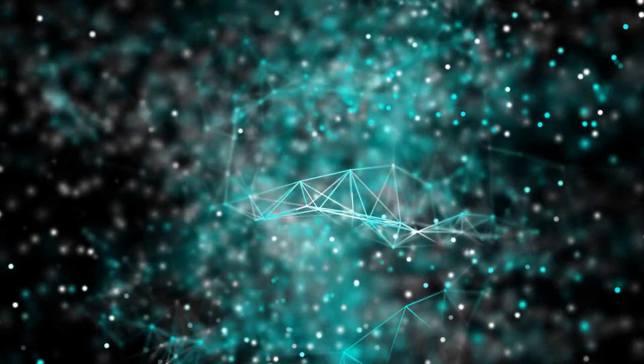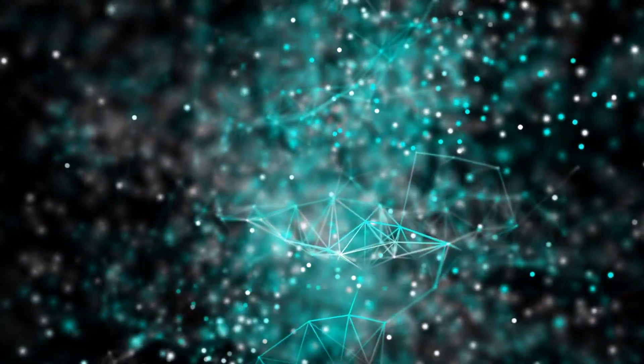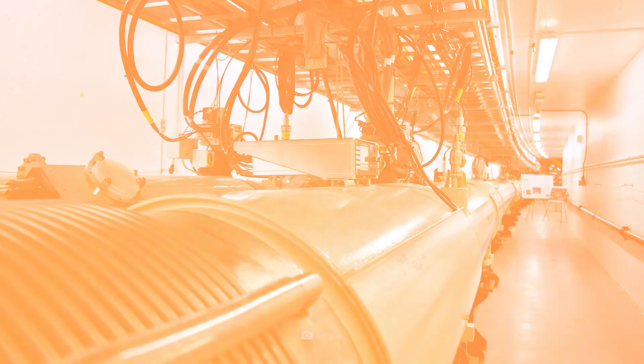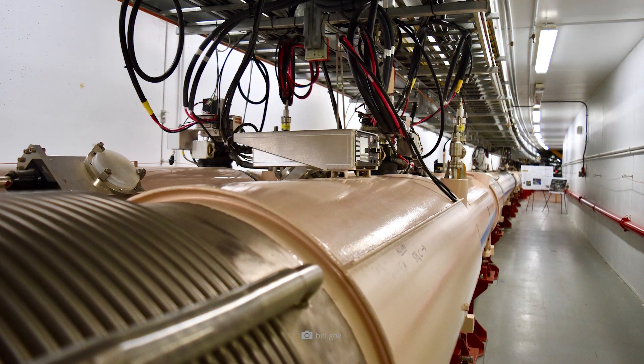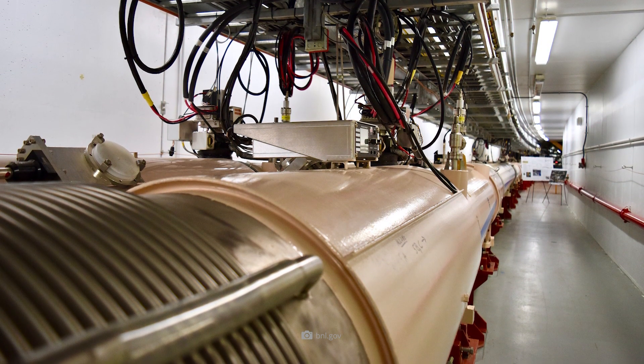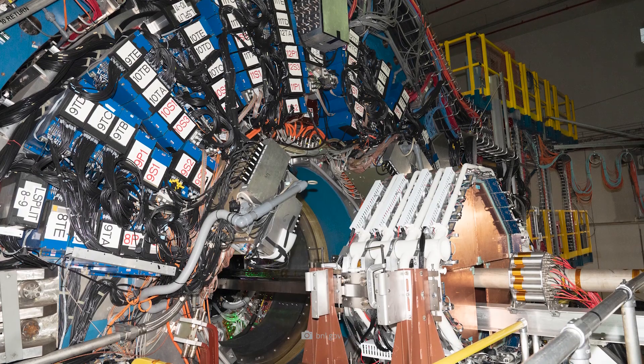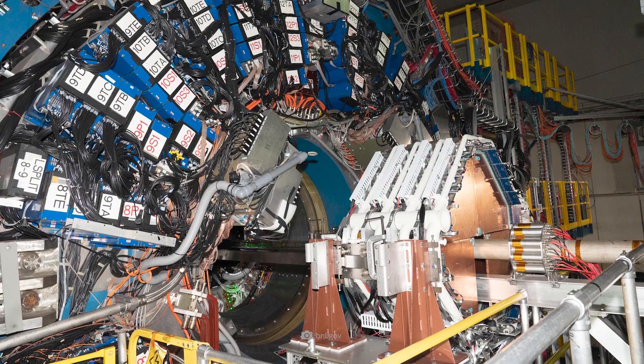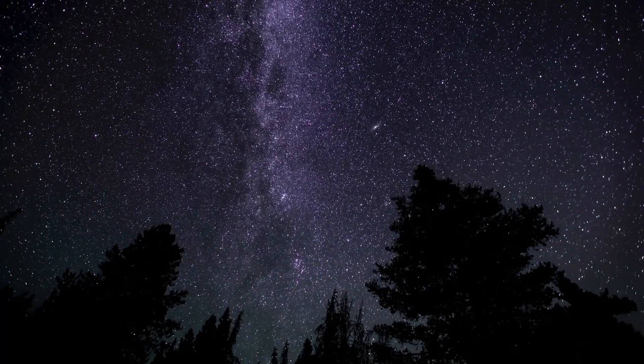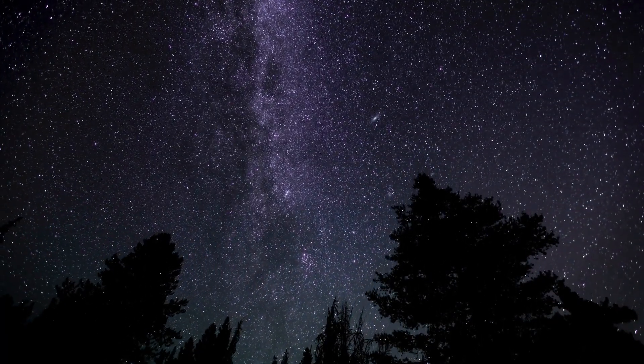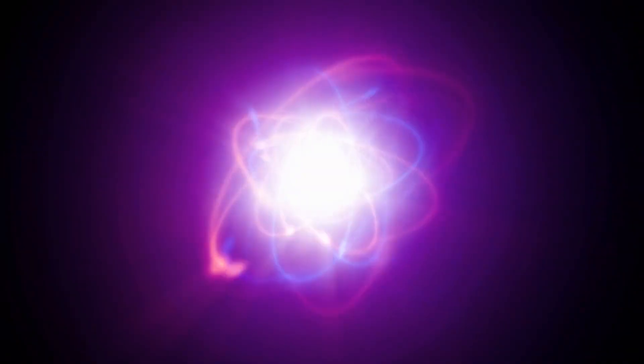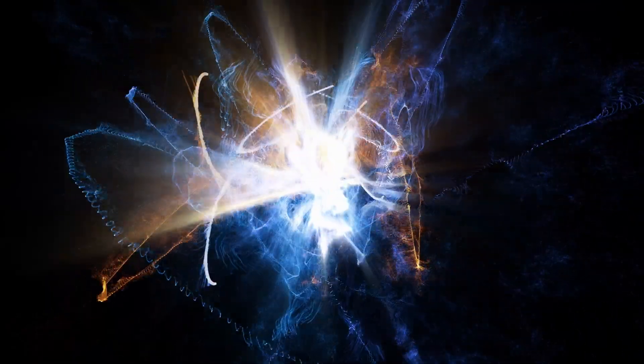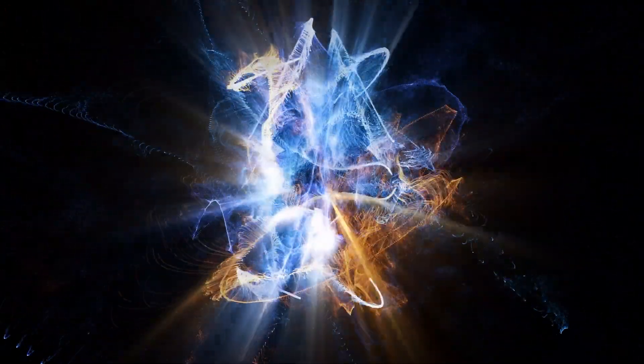For their experiment, the researchers used the Relativistic Heavy Ion Collider at Brookhaven National Laboratory in the United States to accelerate atomic nuclei of gold, ruthenium, and zirconium and collide them at energies of up to 200 gigaelectron volts. This creates a quark-gluon plasma for about 100 quadrillionths of a second. But sometimes the heavy ions collide not exactly head-on, but slightly offset to the side.